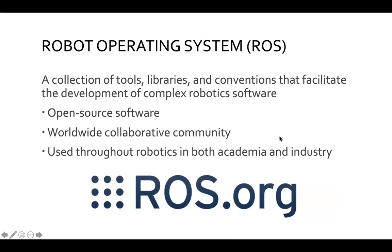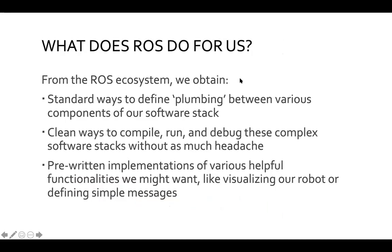ROS — the Robot Operating System — is a collection of tools, libraries, and conventions that facilitate the development of complex robotic software. ROS is open source, collaboratively developed worldwide, and often used throughout research in both academia and industry. Concretely, using ROS gives us standard ways to define the plumbing between components of our software stack, clean ways to compile, run, and debug these pieces, and pre-implemented functionalities like visualization tools and common message definitions.